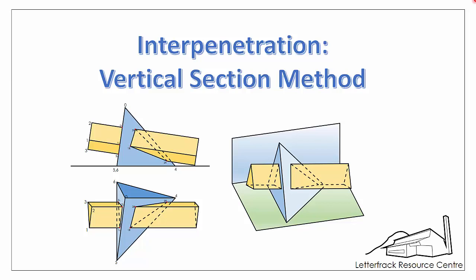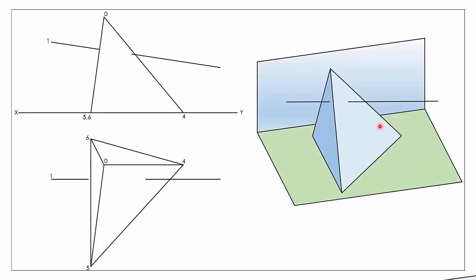We'll begin by looking at what happens if we have one solid. Here we have a regular pyramid and a single line that's going to pierce through our pyramid. You can see there are going to be two points where our line pierces our pyramid — it will enter along this surface here and exit on this surface here. We're going to find each of those two points separately.